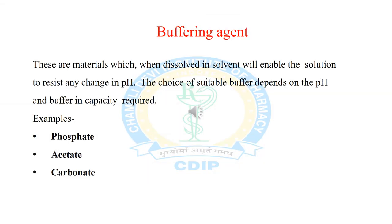The next additive is buffering agent. Buffering agents are materials which, when dissolved in a solvent, enable the solution to resist any change in pH. The choice of a suitable buffer depends on the pH and buffer capacity required. Buffering agents are generally weak bases or weak acids with their salts. Examples include phosphate buffer, acetate buffer, and carbonate buffer.